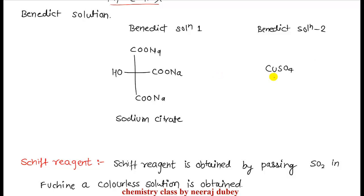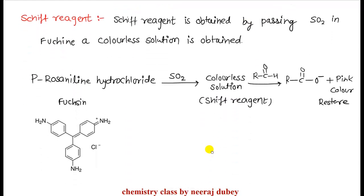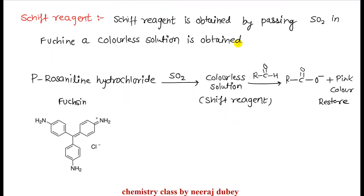Looking at Benedict's solution, it also has two solutions: Benedict solution 1 and Benedict solution 2. Benedict solution 1 contains sodium citrate, whereas in Fehling's we used sodium potassium tartrate. The second solution is the same — copper sulfate. So the behavior of Benedict's solution and Fehling's solution is almost the same.